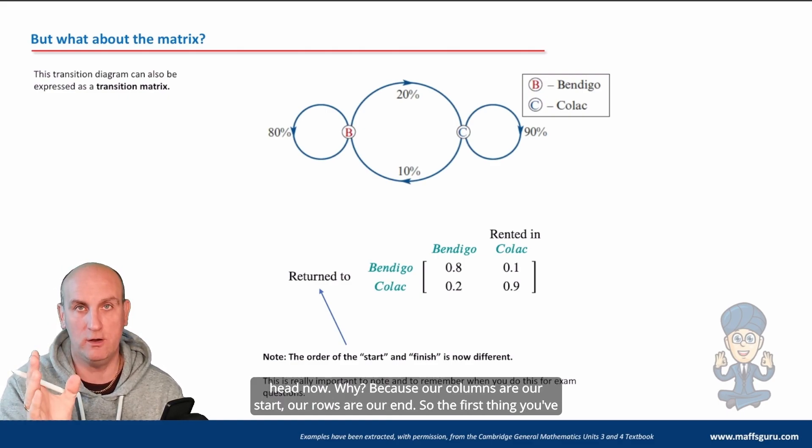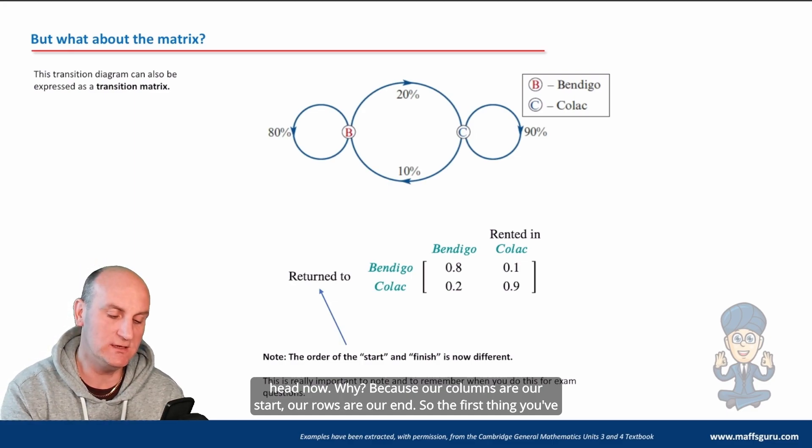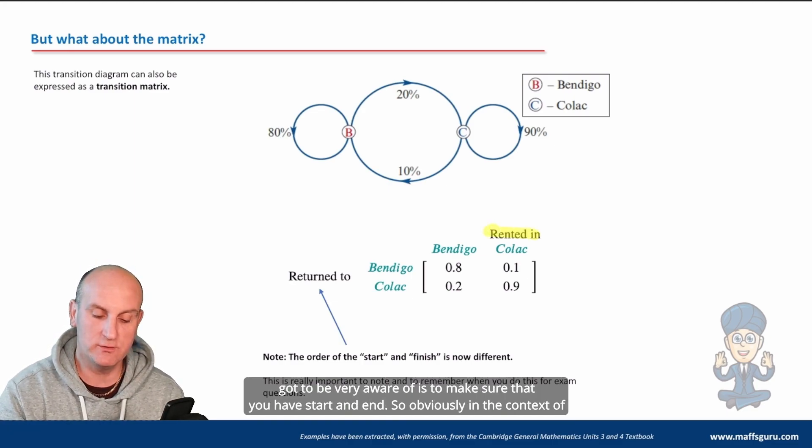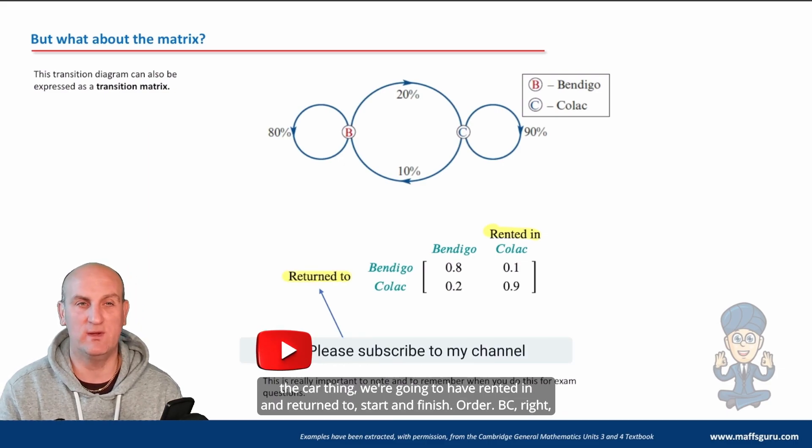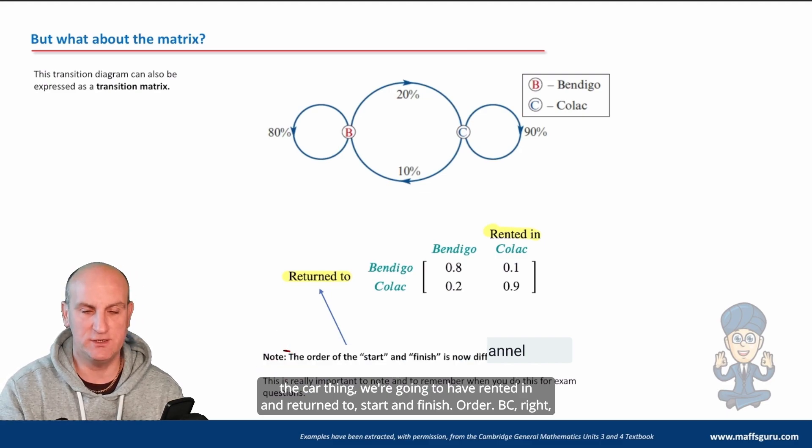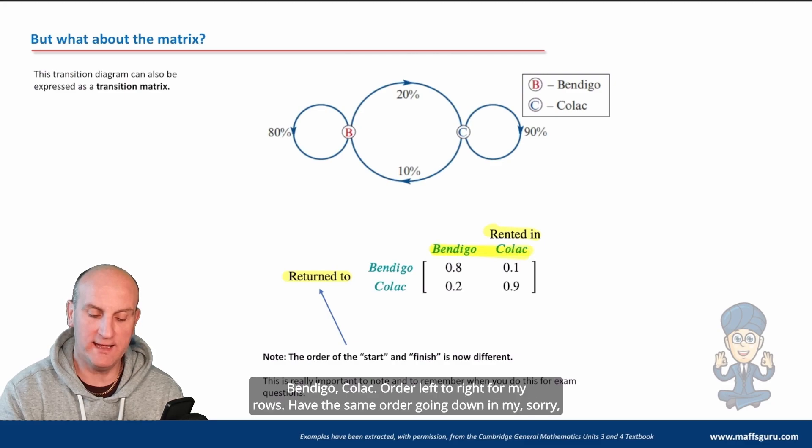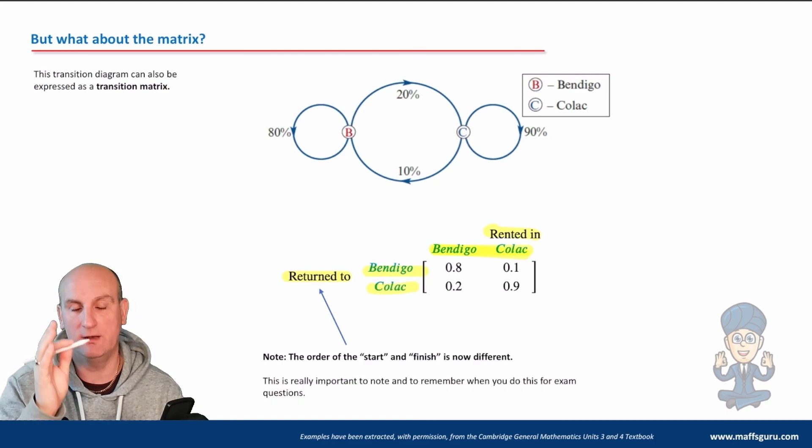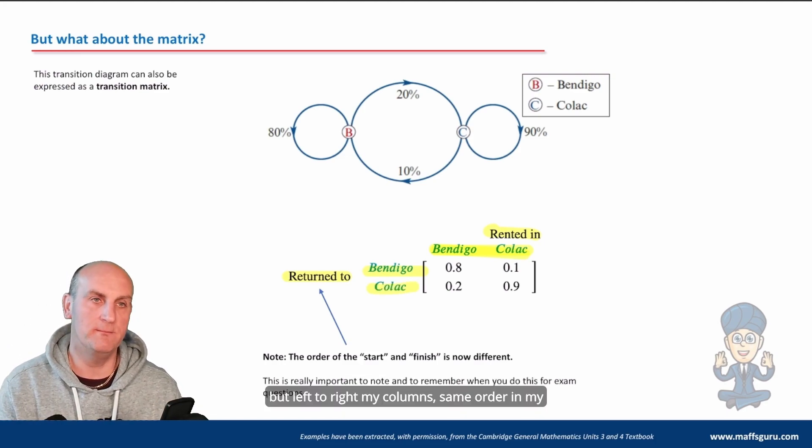So the first thing you've got to be very aware of is to make sure that you have start and end. So obviously, in the context of the car thing, we're going to have rented in and returned to start and finish. Order. BC, all right? Bendigo Colac. Order left to right for my columns, same order in my rows. Really important.